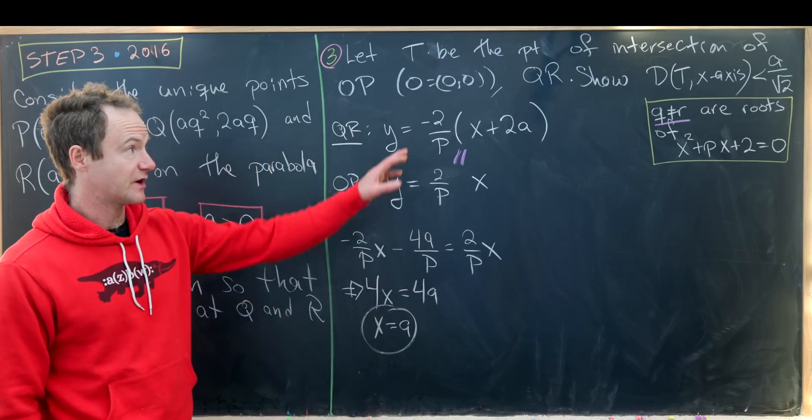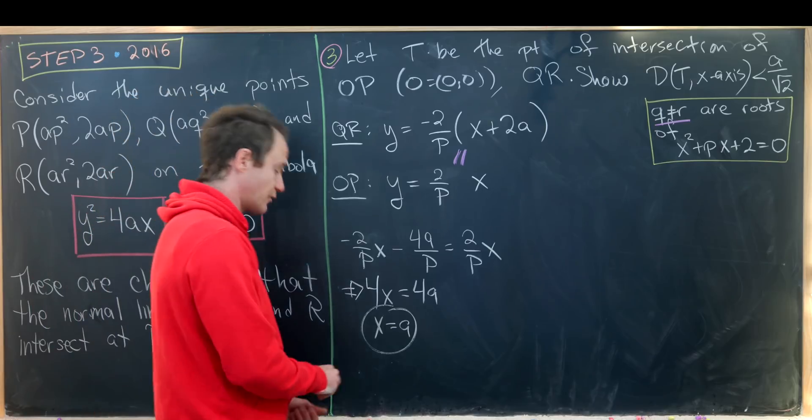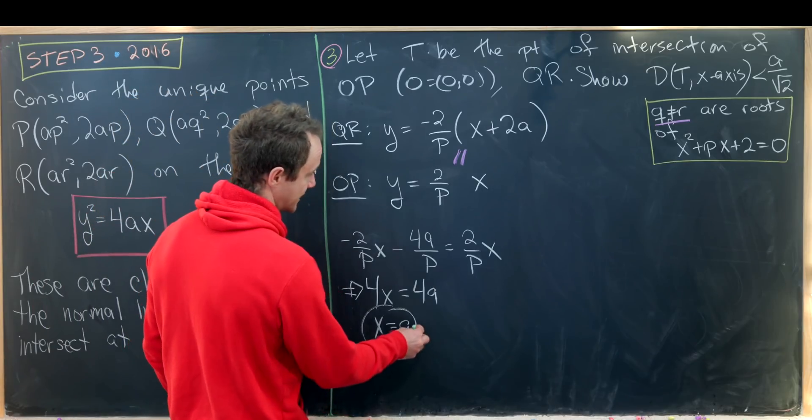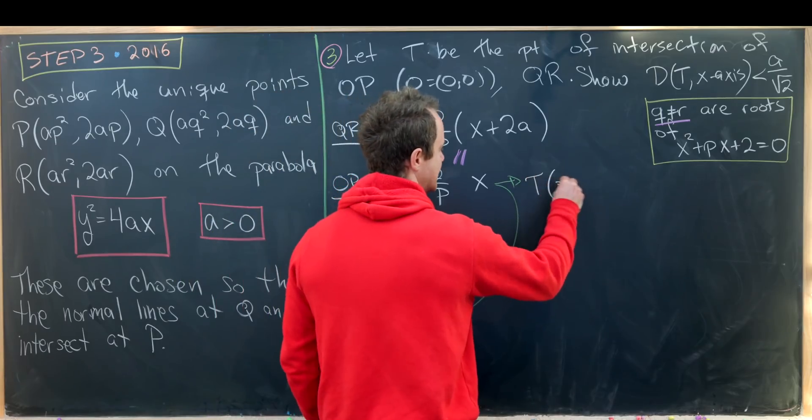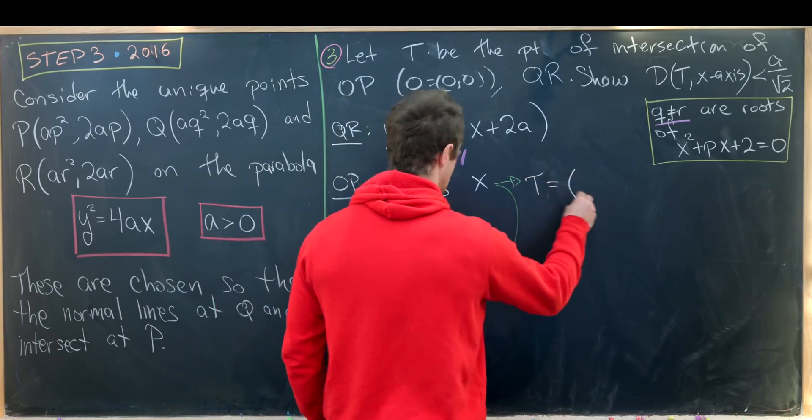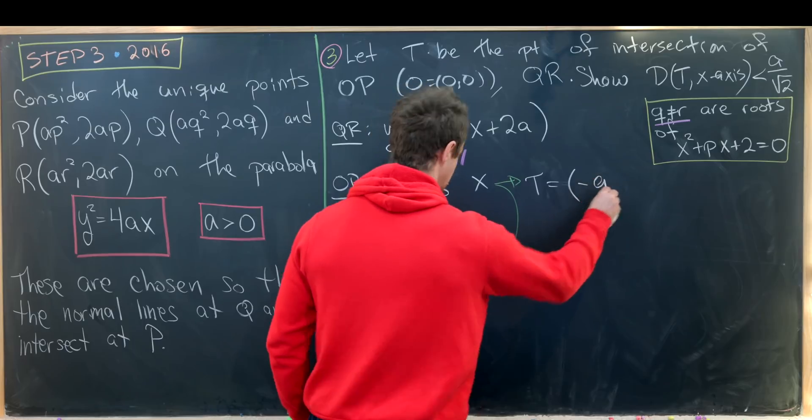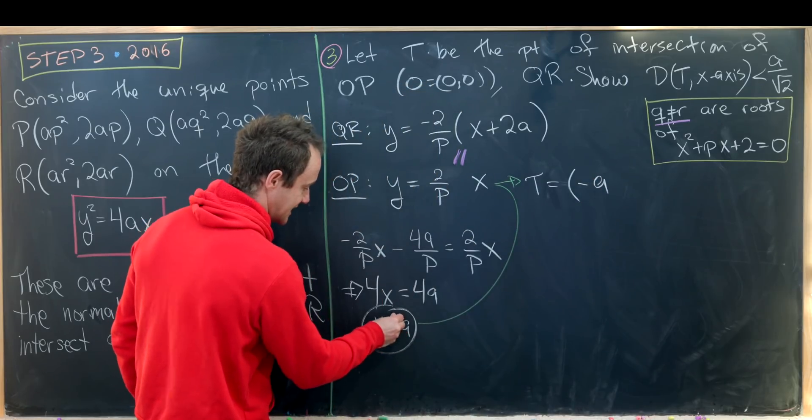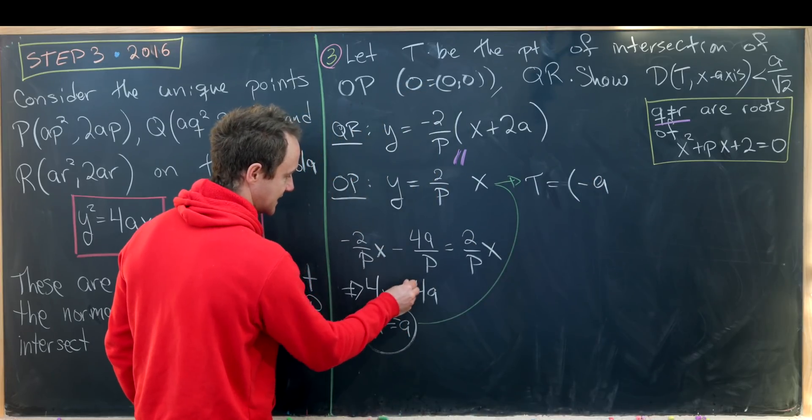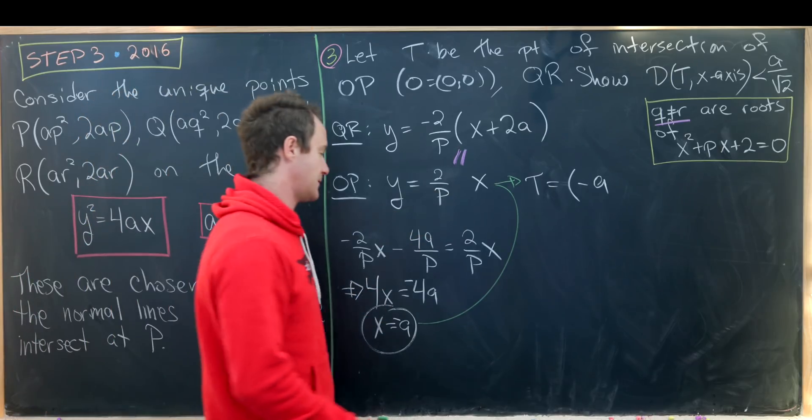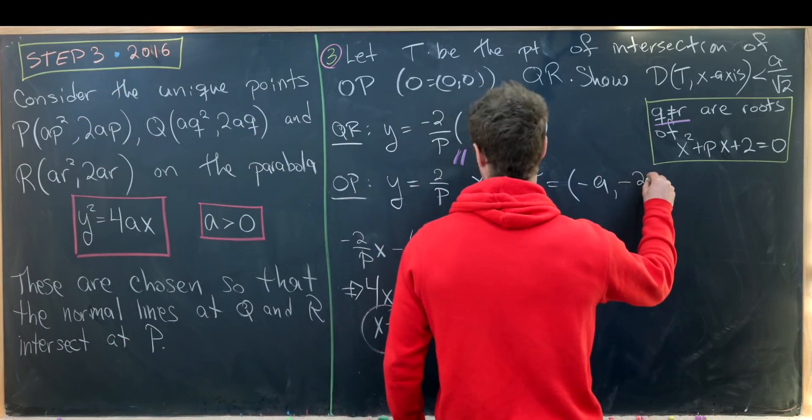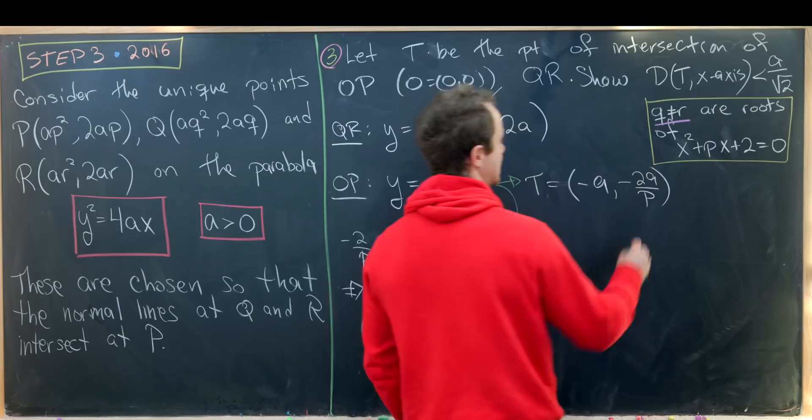Now since we want to know the distance to the X axis we really need to know the Y coordinate as well. In fact all we need is the Y coordinate. So that tells us our point T is equal to, we've got -A here. Sorry this should have been a minus sign because we have a minus sign attached to this. And then plugging that in we'll have -2A/P.